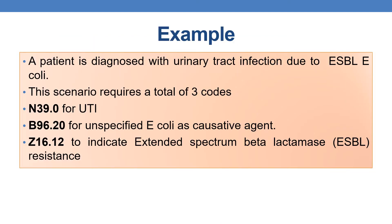Now let us discuss a coding example. A patient is diagnosed with urinary tract infection (UTI) due to ESBL E. coli. In this scenario, we require a total of three codes. The first PDX will be N39.0 to indicate the UTI, followed by the causative agent E. coli, with code B96.20.